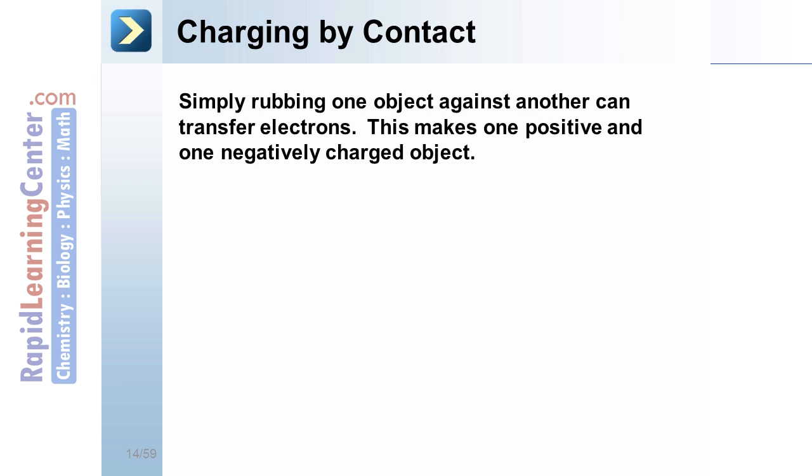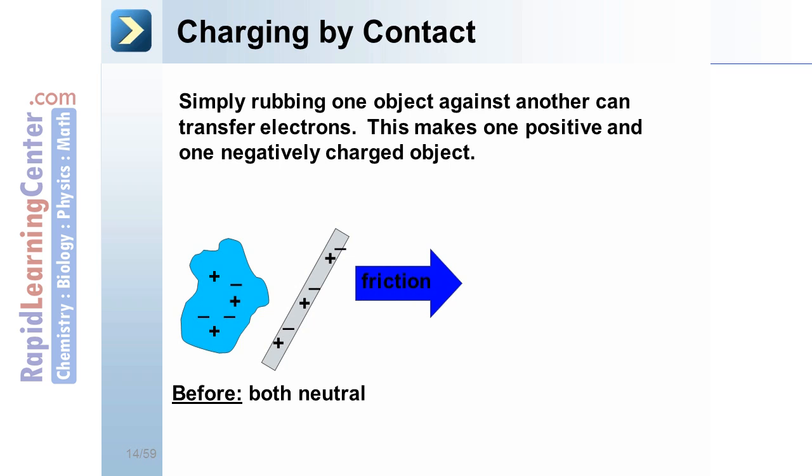Charging by contact. Simply rubbing one object against another can transfer charge. This makes one of the objects positive and the other negative. For example, here's a piece of cloth and a rod, both neutral to begin with. Through a little bit of friction.